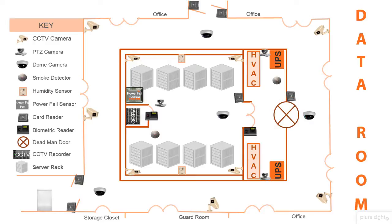I recommend that you start looking at blueprints or even making simple diagrams of your own to map out your environment and to get a better understanding of where all of your controls build upon one another, so that you can determine if you have any single points of failure. Try to imagine what you would need to bypass these controls as an attacker, and then calculate how long it would probably take someone to actually pull that off.